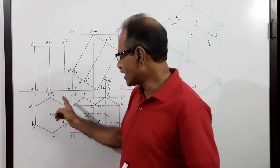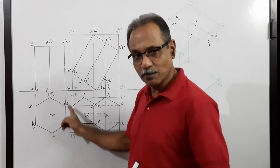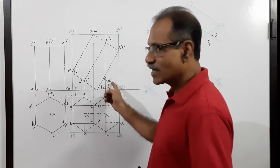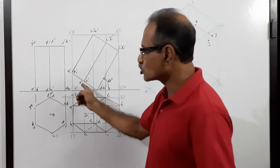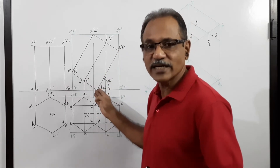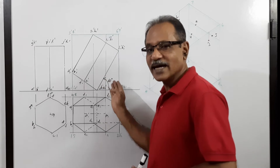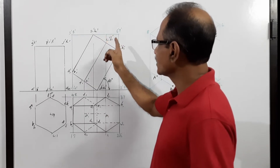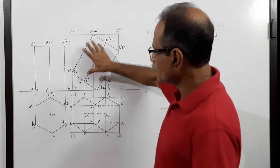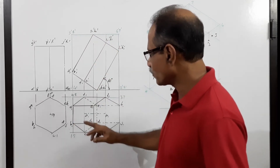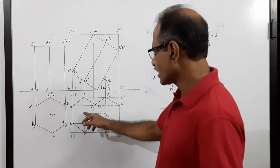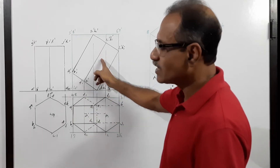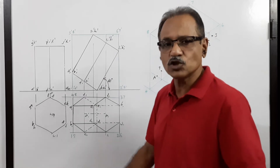The hexagonal prism is resting on HP on its base, with an edge of base DE purposefully kept perpendicular to VP. Draw the plan and elevation, then redraw that elevation showing the angle making 60 degrees to HP. When this angle is 60 degrees, the axis also makes 60 degrees. I am redrawing it, showing that angle: A1, B1, C1, D1, E1, F1, G1, H1, I1, J1, K1, L1. The new plan and final elevation are projected.